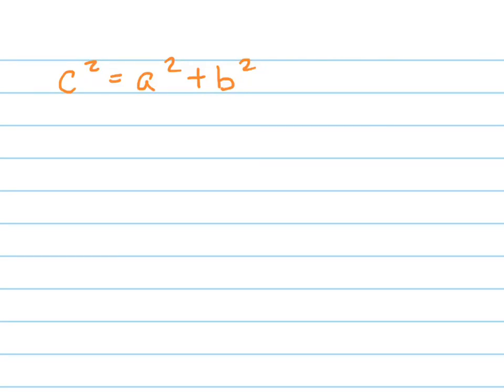Let's solve this equation: C squared equals A squared plus B squared. Let's solve it for A.